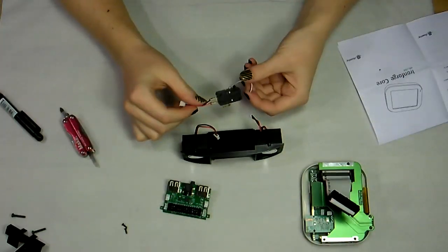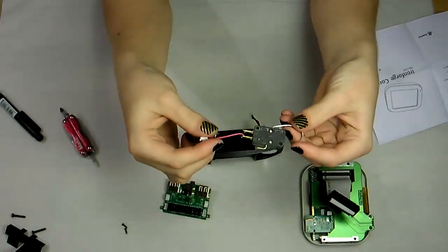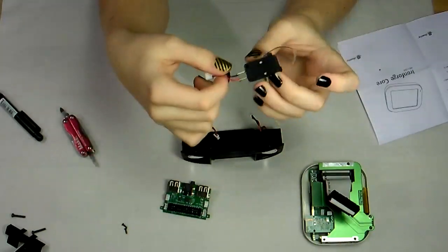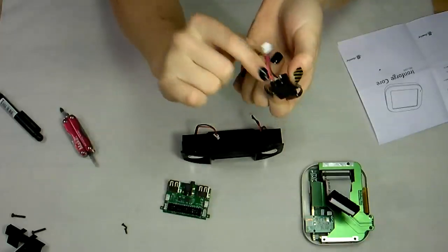The only soldering that's required for the assembly of the Chumby Guts Kit is to solder this two-wired connector to the switch on these tabs right here.